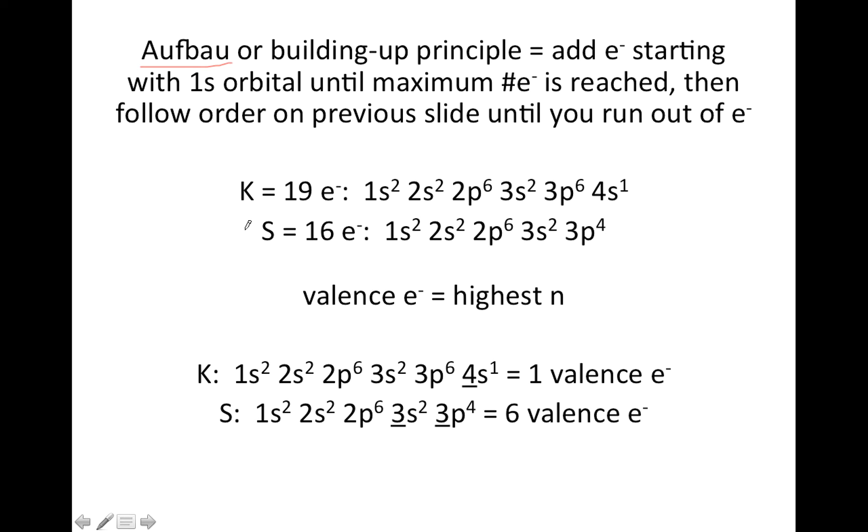So let's do a couple of examples. The element potassium has 19 electrons, so we write 1s, and then you use subscripts to tell someone how many electrons maximum you could fit in there. So s orbitals, you can fit two, and then you go on to 2s, and you can fit two.